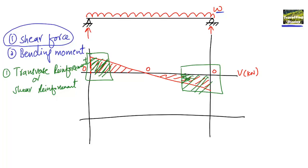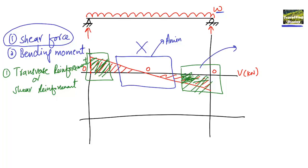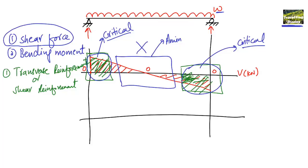The mid-region of the beam is not critical in shear — we can ignore it for shear design or provide only minimum shear reinforcement as required by codes. The regions near the supports are critical, so we must provide shear reinforcement there according to the codes.